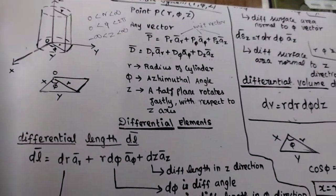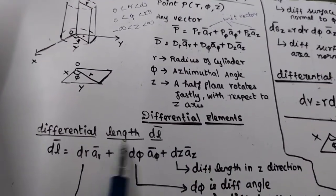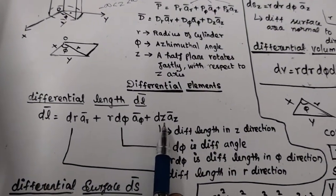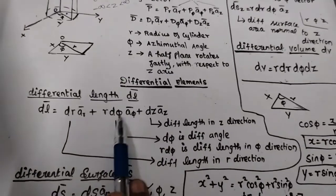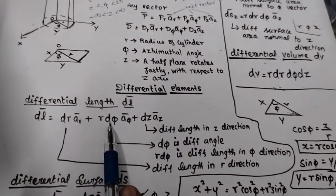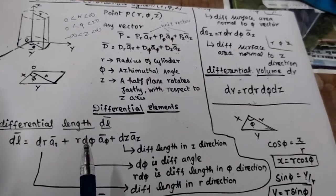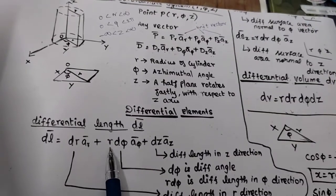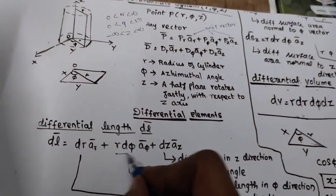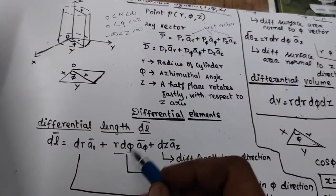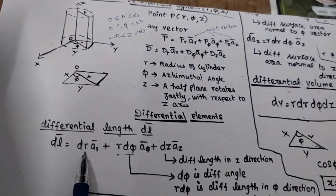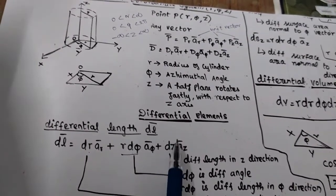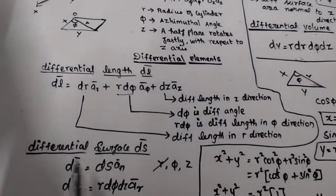For differential elements recap: differential length dl vector = dr·ar + r·dφ·aφ + dz·az. dφ always comes with r because dφ is a differential angle — if you need differential length, multiply by r. So dr is differential length in r direction, r·dφ is differential length in phi direction, and dz is differential length in z direction.